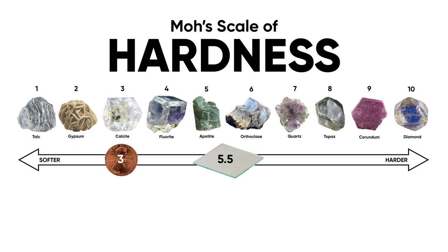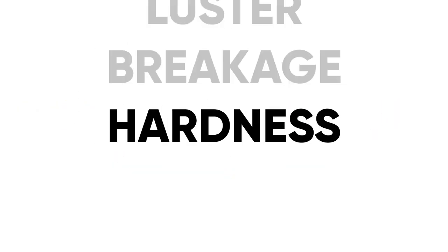A typical test would be to take a mineral and try to scratch a piece of glass. If it does scratch it, you know that mineral has a hardness greater than 5.5. If it does not leave a scratch on the glass, then it would be less than 5.5. So that's hardness.